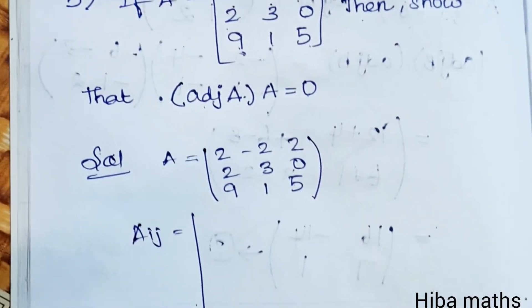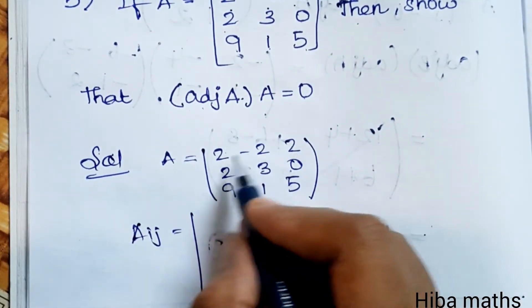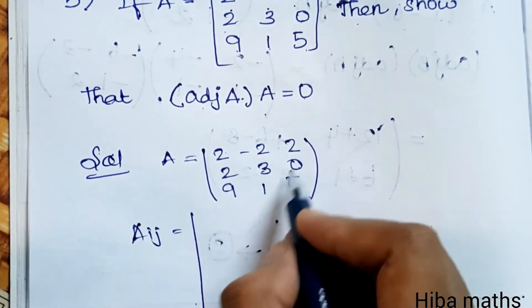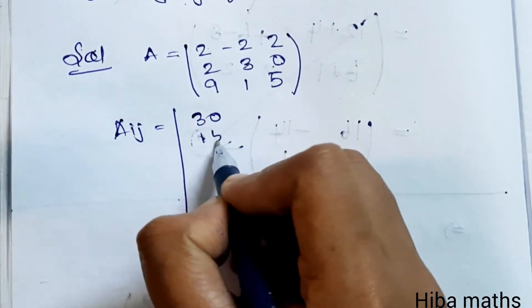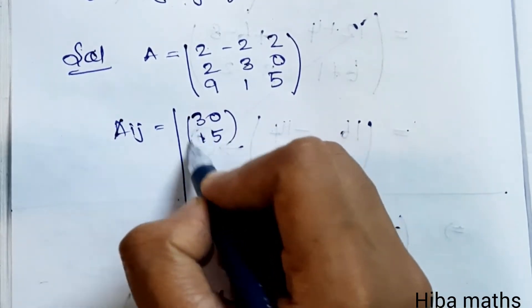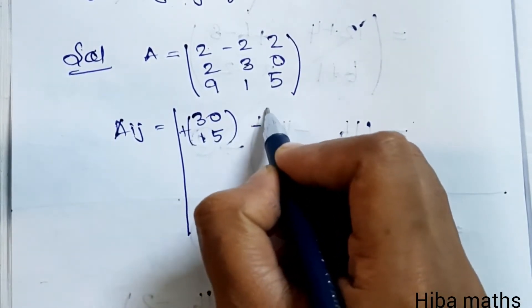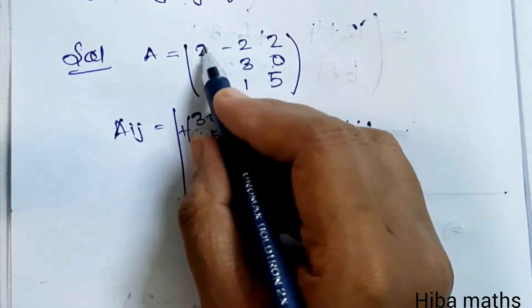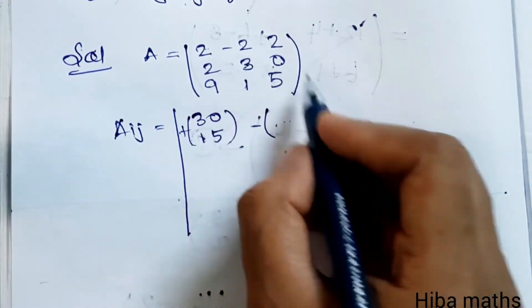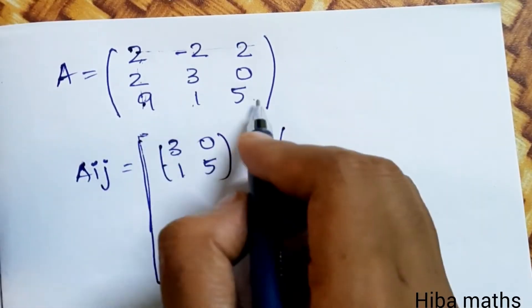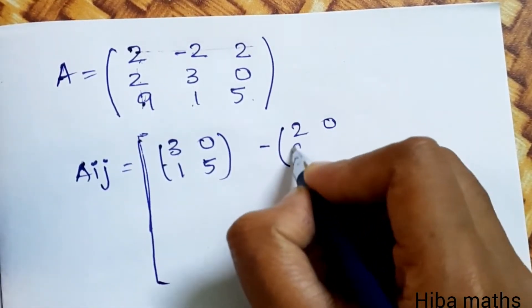First row, first column cofactor: the minor is [[3, 0], [1, 5]], so C₁₁ is positive. First row, second column cofactor: the minor is [[2, 0], [9, 5]], so C₁₂ is negative.